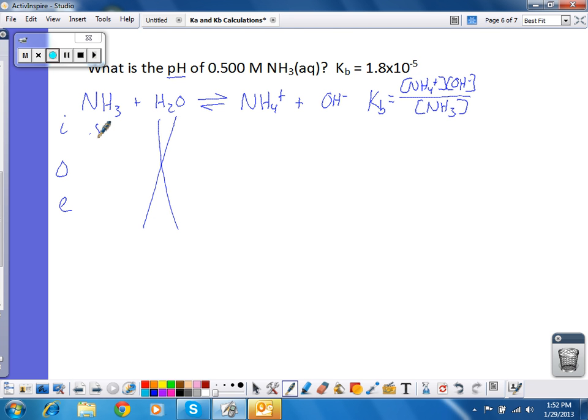So 0.5 molar ammonia. Nothing to start. To get to equilibrium, I have to lose ammonia, gain ammonium, gain hydroxide. I'm going to call that amount x. It's all 1 to 1, so it's all x. So that would be 0.500 minus x. That would be x. That would be x.